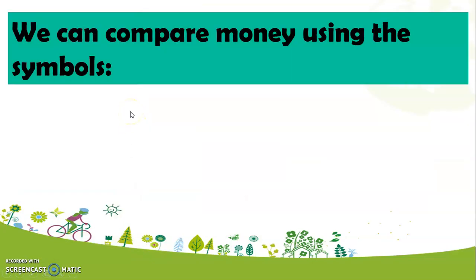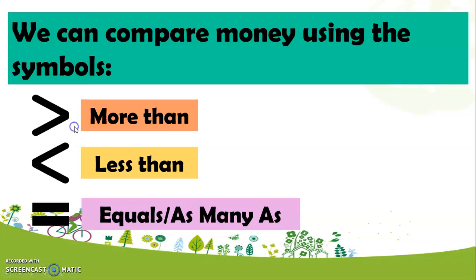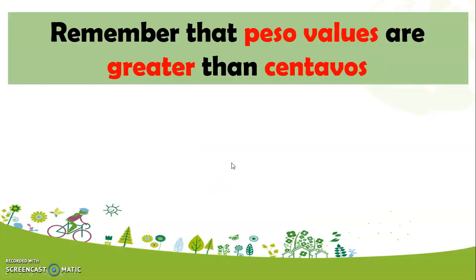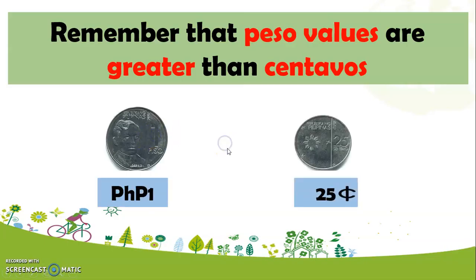Now, we can compare money using the symbols: more than, less than, and equals or as many as. Remember that peso values are greater than centavos. So, we have here 1 peso and 25 cents. We know that 1 peso coin is greater than 25 cents, so we use the symbol more than.